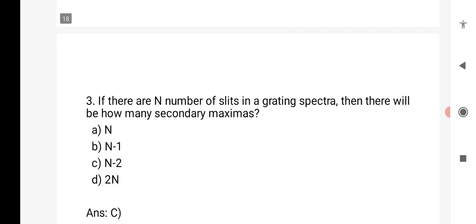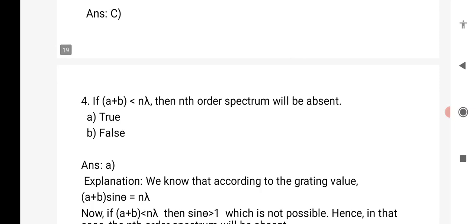Third, if there are n number of slits in a grating spectra, then there will be how many secondary maximums? The answer is option C, n minus 2.